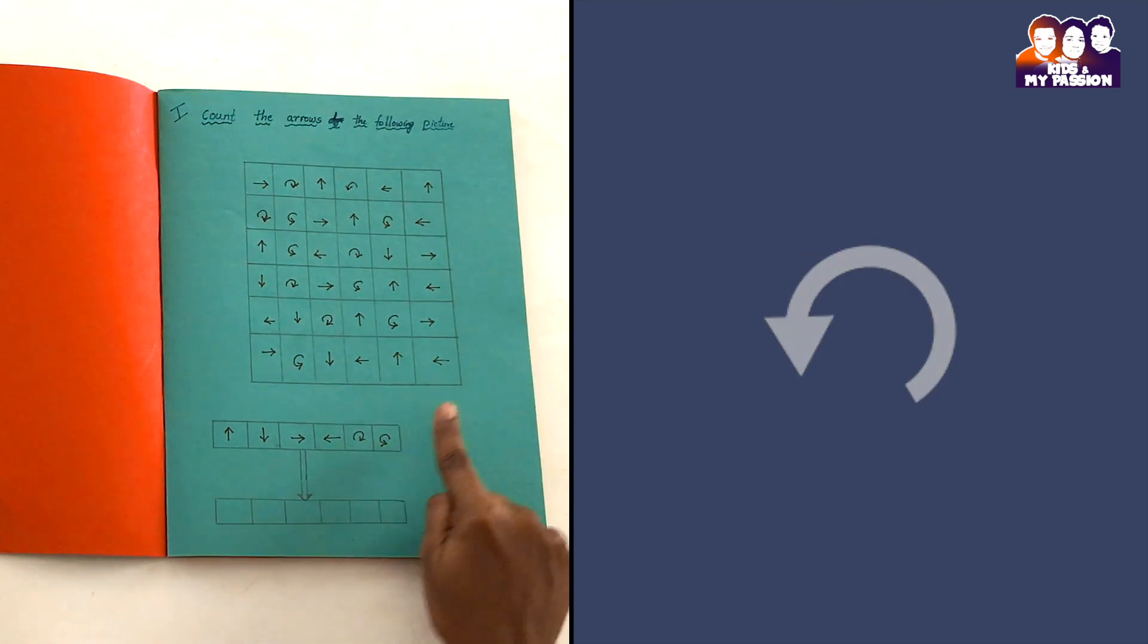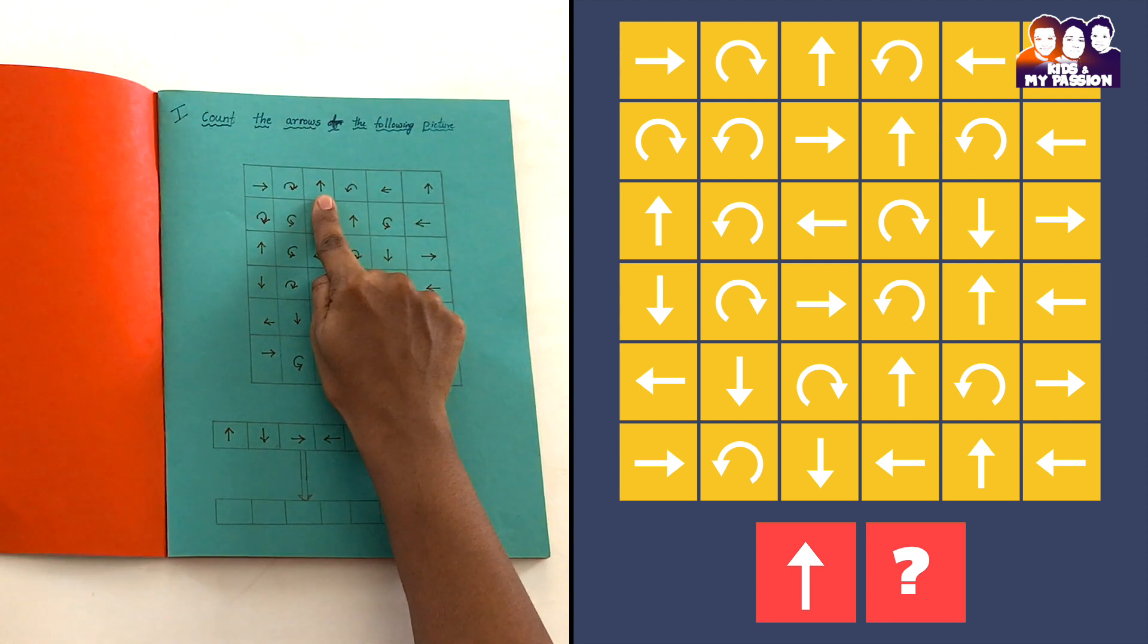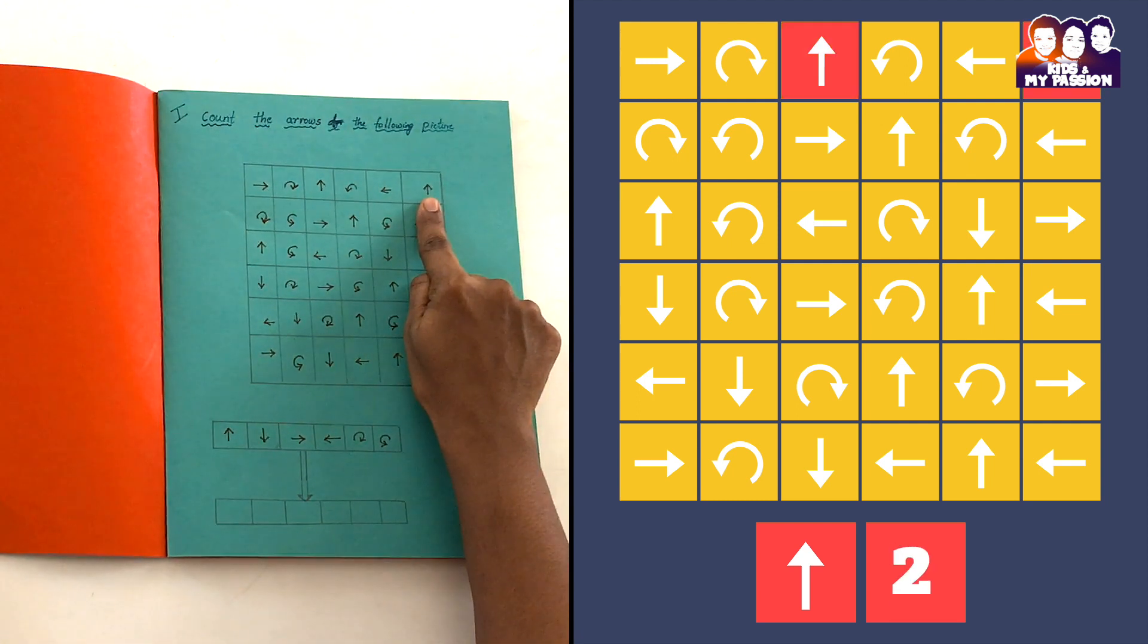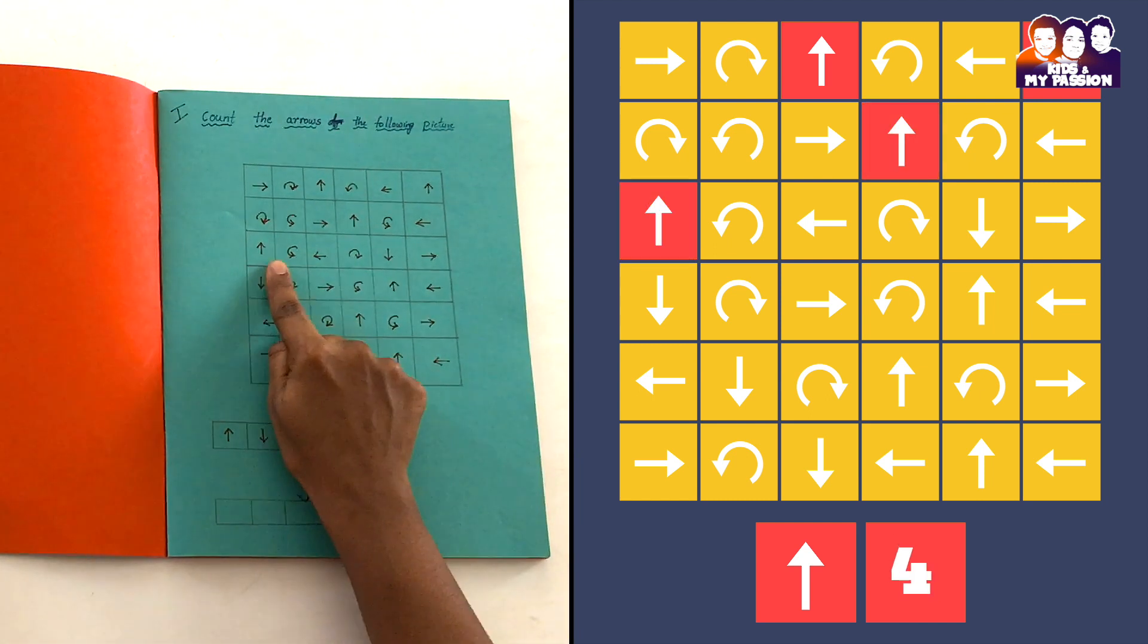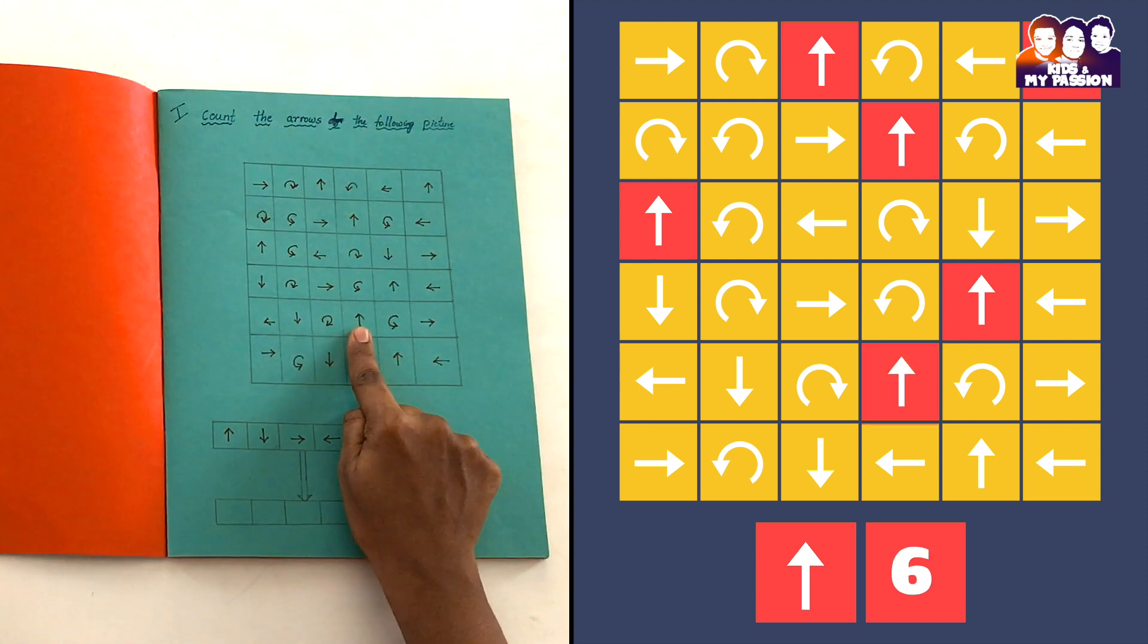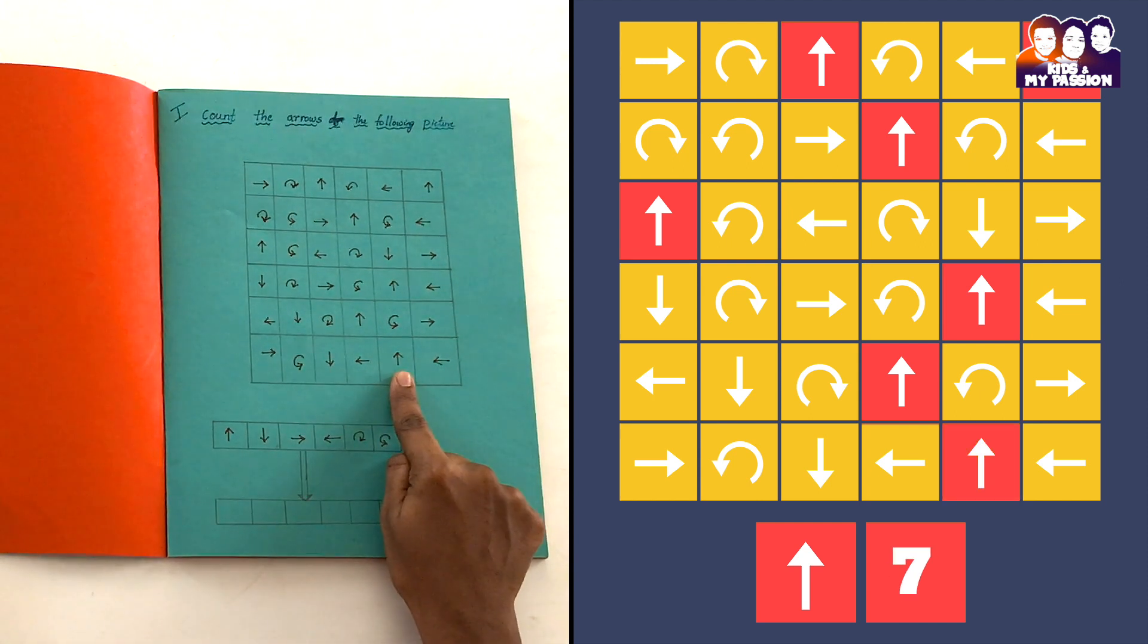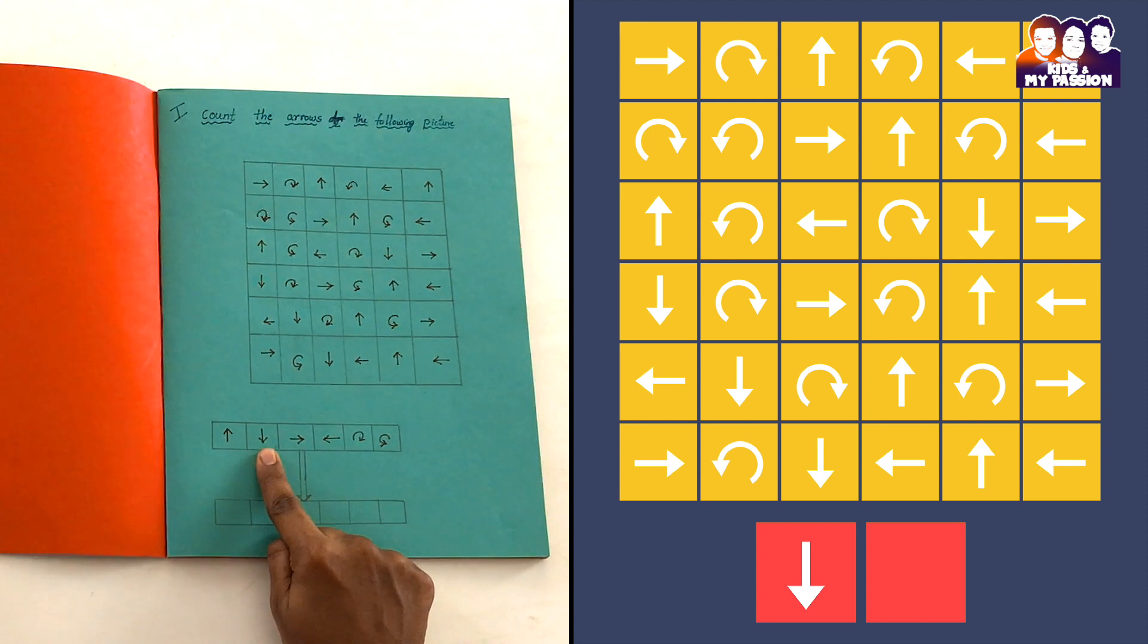Slowly, kids need to search up arrow in each row: one, two, three, four, five, six, seven. So they need to enter the value seven.